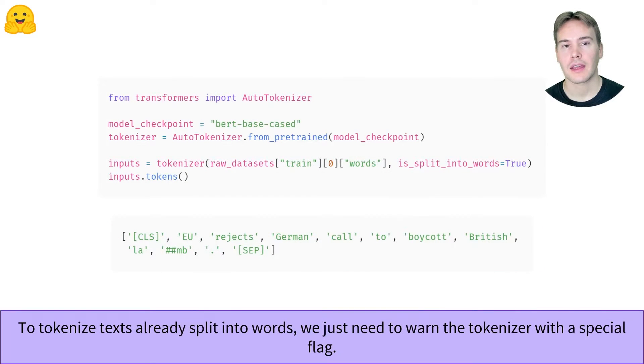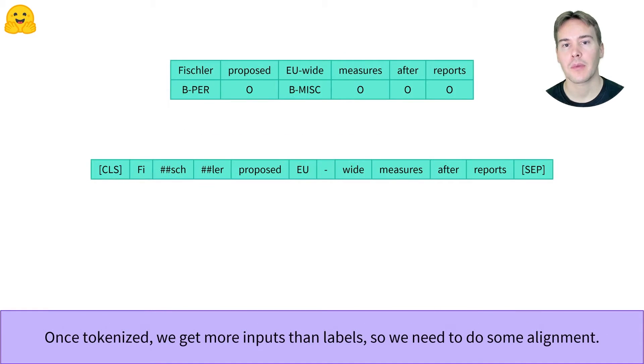The first step to preprocess our data is to tokenize the words. This is very easy done with a tokenizer. We just have to tell it we have pre-tokenized the data with the flag is_split_into_words equal true. Then comes the hard part.